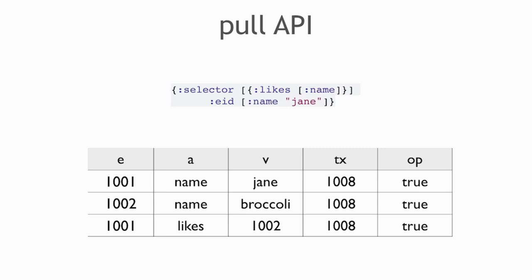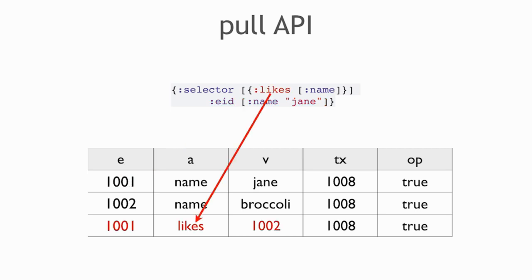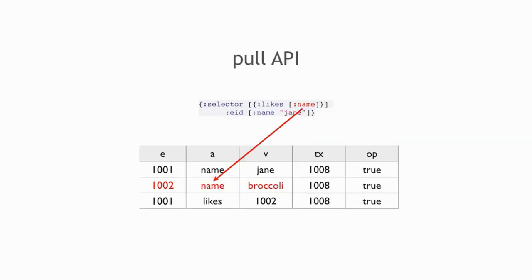This says: find the things that Jane likes and then find their name. Jane's name is a lookup ref, and presumably name is unique in this database, so that matches entity 1001. Then likes finds item 1002. Then the nested pull expression says: the name of 1002 is broccoli. So this returns a map that has in it likes broccoli.